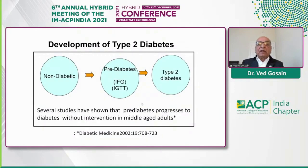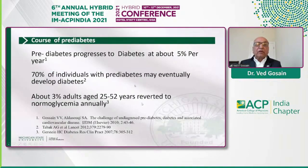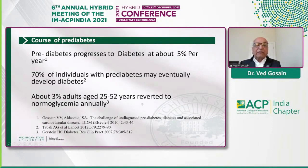If you look at the progression of non-diabetic individuals, people with some genetic predisposition and environmental factors may develop diabetes, but they go through a phase of prediabetes consisting of impaired fasting glucose or impaired glucose tolerance. If you don't intervene, they'll progress to diabetes. The rate of progression is approximately 5% per year; 70% of individuals will eventually develop diabetes, and about 3% of adults will revert to normal glycemia annually.